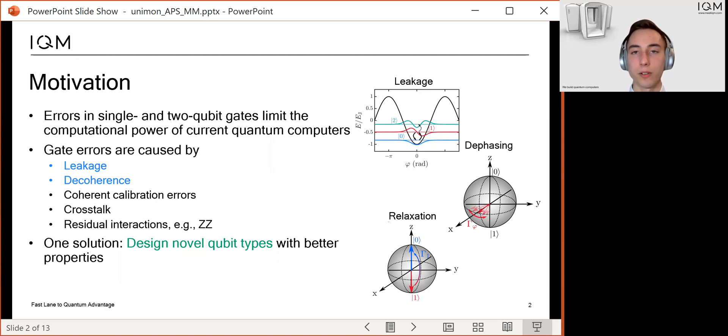One solution to reduce gate errors is to design novel qubit circuits that help to mitigate some or multiple of these error sources. We have designed the Unimon to reduce errors related to leakage and decoherence.